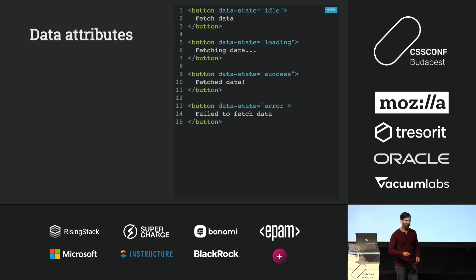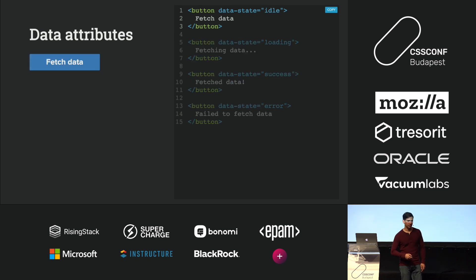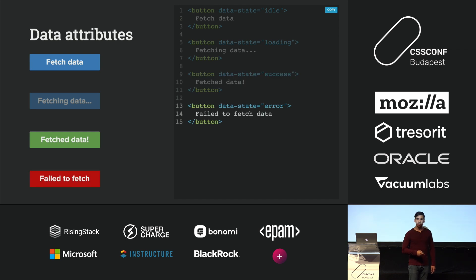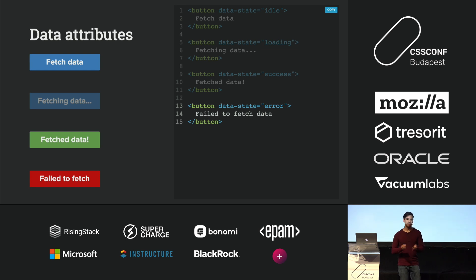These data attributes represent each of the finite states in your components or application. For example, this button could have a data-state of idle — meaning nothing happened yet — loading, success, or failure. You can name these states whatever you want, and that's the beauty of data attributes.